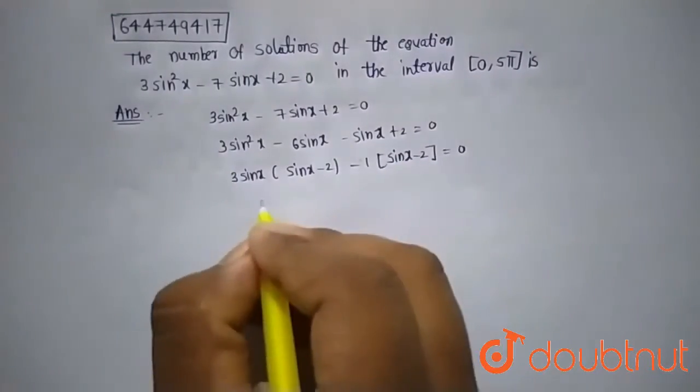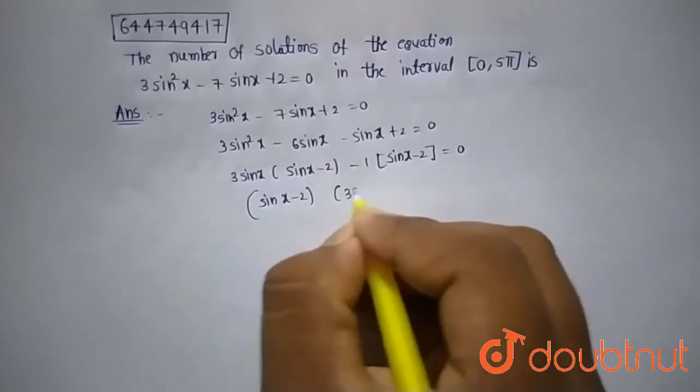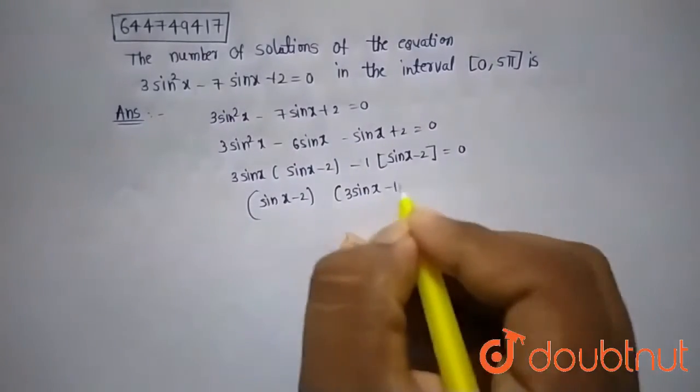Now let's take out (sin x - 2) common. So after taking (sin x - 2) common, we get (3sin x - 1) = 0.